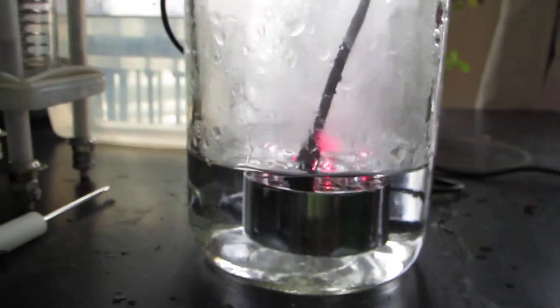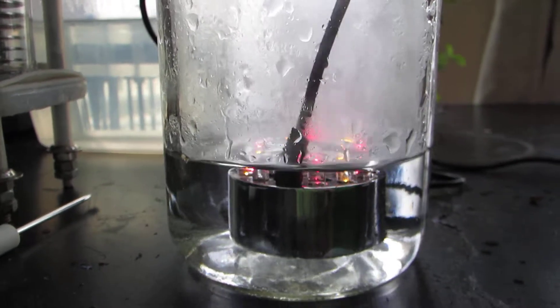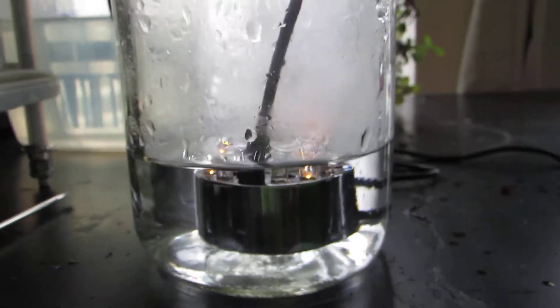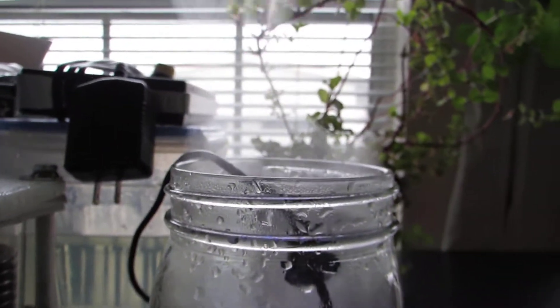When I put it in to just regular room temperature water, I barely got any vapor out of it. So I had to put this jar in the microwave for about two minutes until it was boiling. And then I put it in there. And as you can see, the vapor is coming out great.